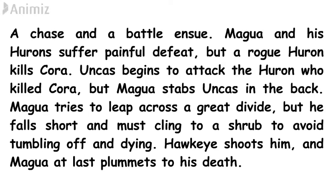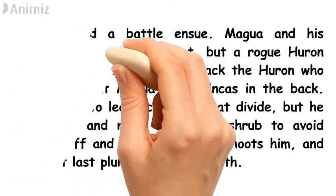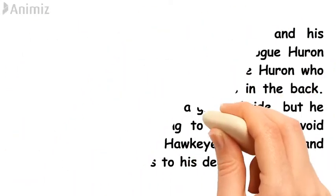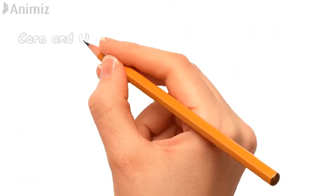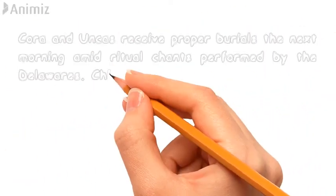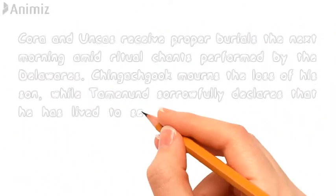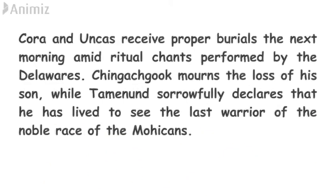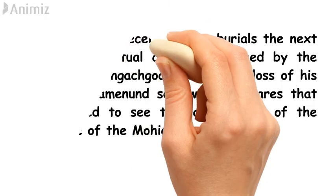Cora and Uncas receive proper burials the next morning amid ritual chants performed by the Delaware. Chingachgook, now left without his son, mourns deeply, while Tamenund sorrowfully declares that he has lived to see the last warrior of the noble race of the Mohicans.